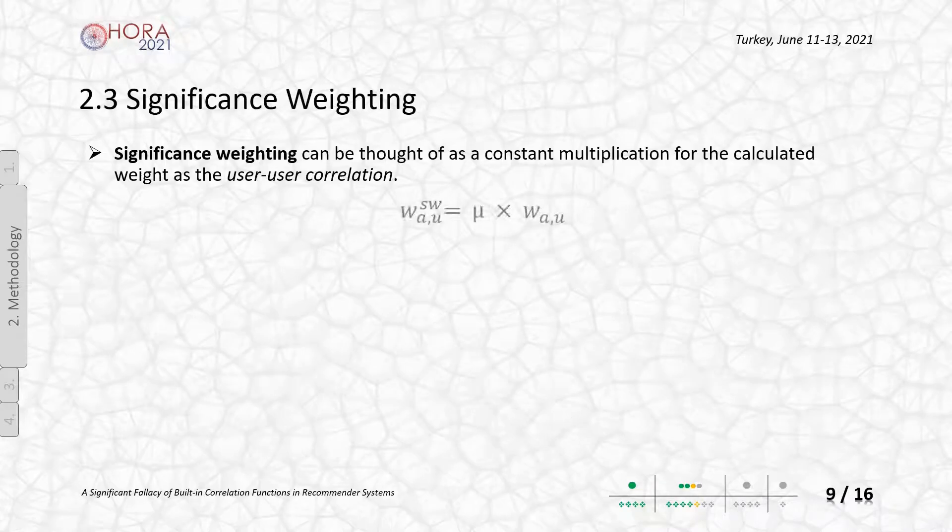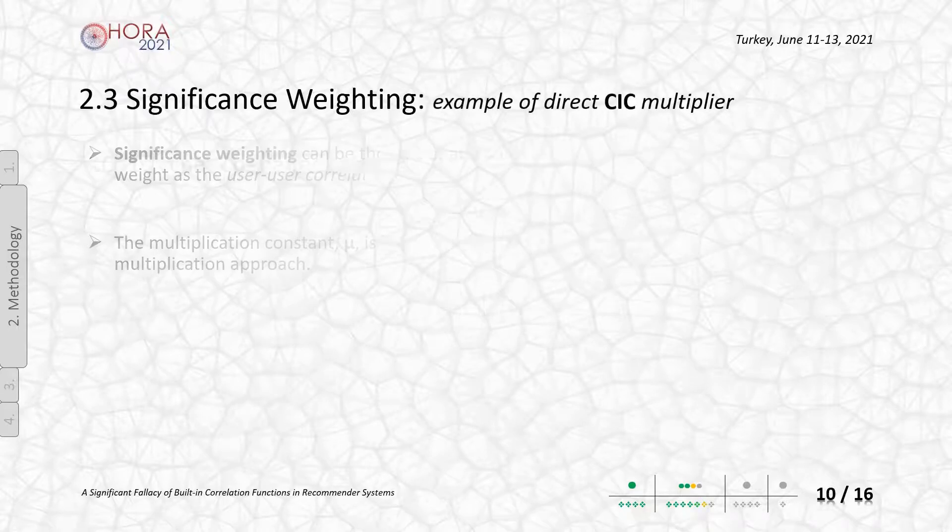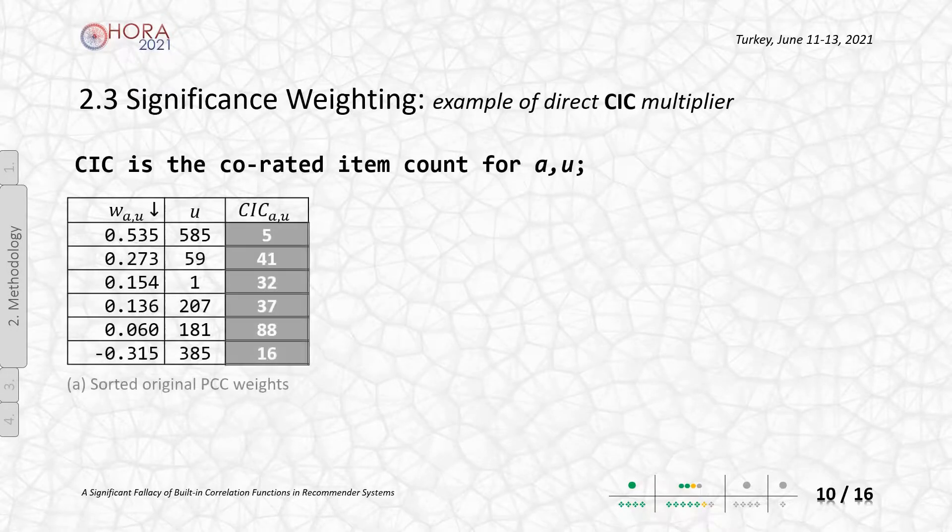In our previous study, we underlined the positive effect of the significance-weighting methodology. Therefore, we added this multiplication in the scope of this study. You can see the constant multiplier mu, which is the common rated item count.